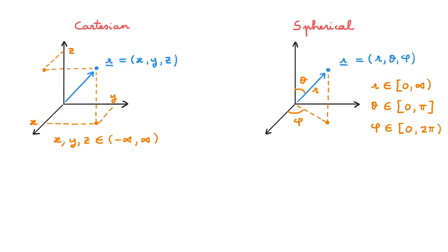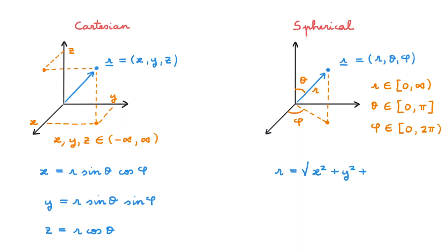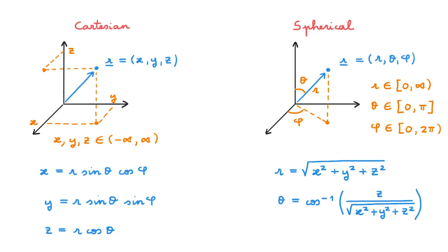To transform between these two sets of coordinates, we need the mathematical relations. We find that x equals r sin(theta) cos(phi), y equals r sin(theta) sin(phi), and z equals r cos(theta). Going the other way, r is the length of the vector r, theta is the inverse cosine of z over r expressed in Cartesian coordinates, and phi is the inverse tangent of y over x. It is critical to highlight that I am using the so-called physics convention. Mathematicians typically use a different convention where they exchange the definitions of theta and phi, so we all have to be very careful to be aware of the convention being used when we consult the literature.